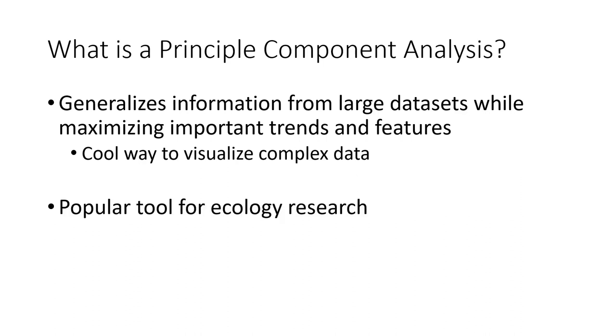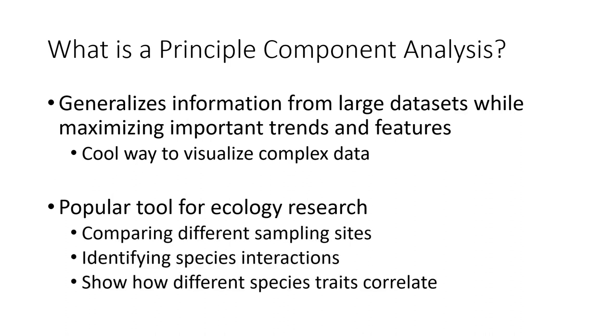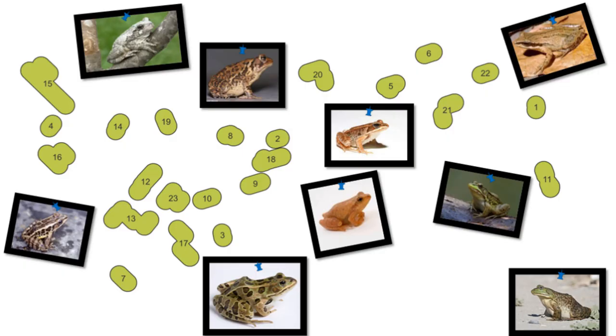PCAs are often used in ecology research. They can be used to compare different sampling sites, identify interactions among species, and show how different species traits correlate. We will be going through an ecology-based example in this tutorial, assessing the presence absence of different species of frogs across multiple sampling sites.